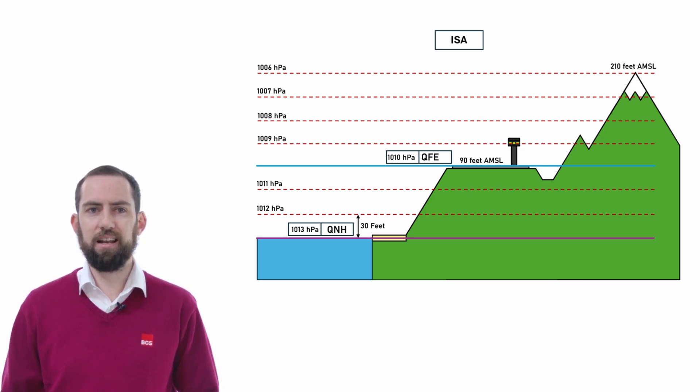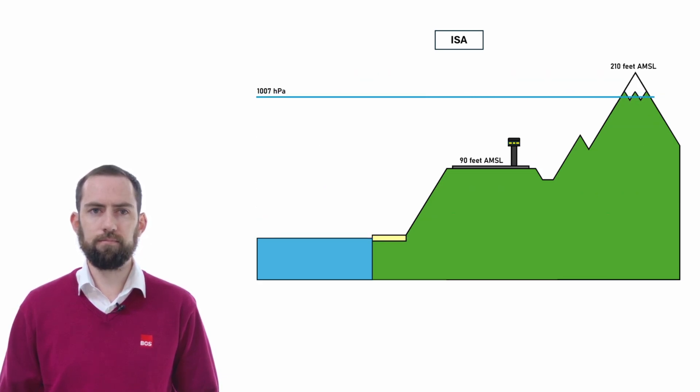This means that the pressure at sea level may not be 1013 hectopascals. So let's just say that the pressure at our airfield dropped, say to 1007 hectopascals. Look at where the 1007 level is right now.